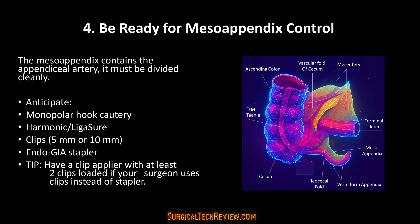Be ready for meso appendix control. The meso appendix contains the appendiceal artery, which must be controlled smoothly and safely. The surgeon may use a stapler, clips, cautery, or a combination — know their preference and have alternatives ready. If clips are used, have a clip applier loaded with two clips ready. If using an Endo GIA stapler, confirm the correct reload color (usually white or blue), correct size, and that it's functioning before you hand it off.